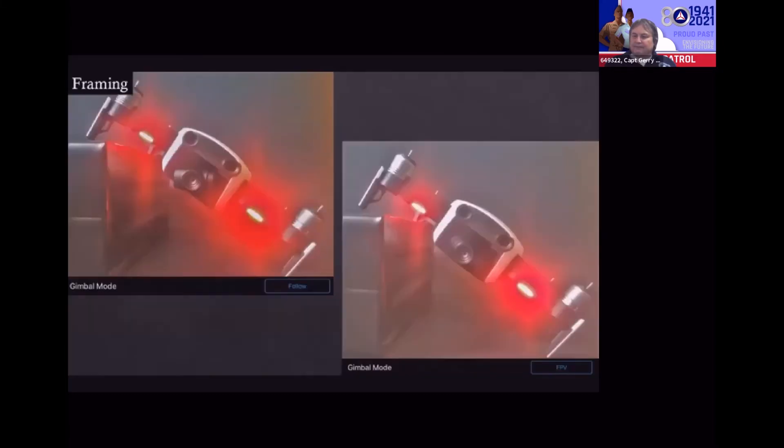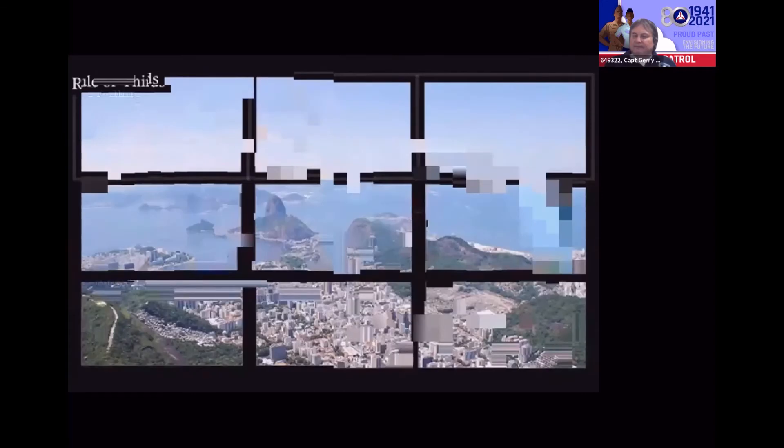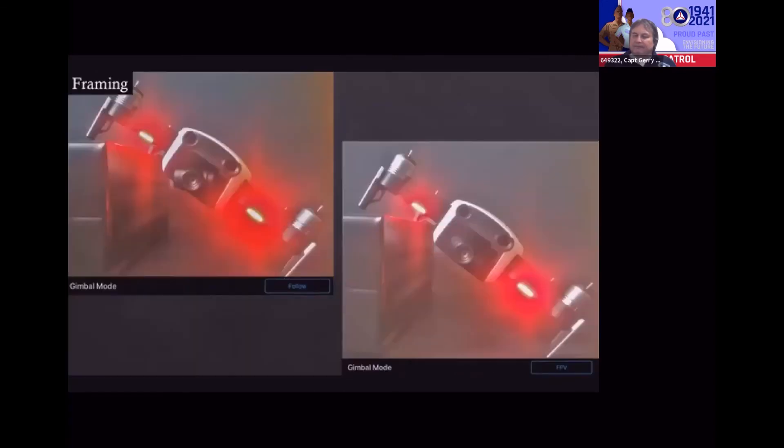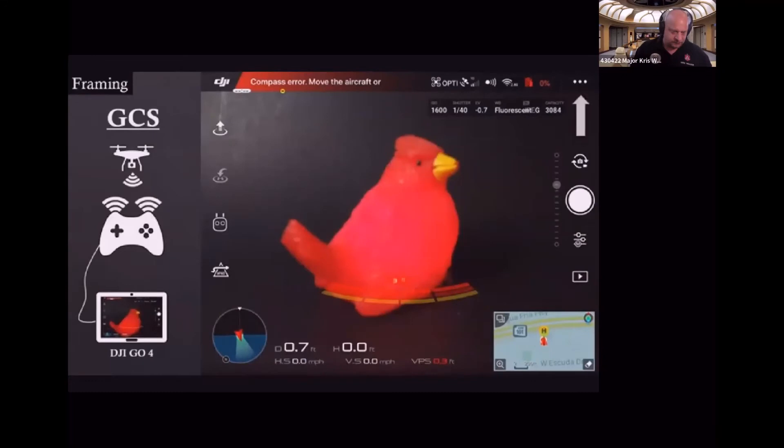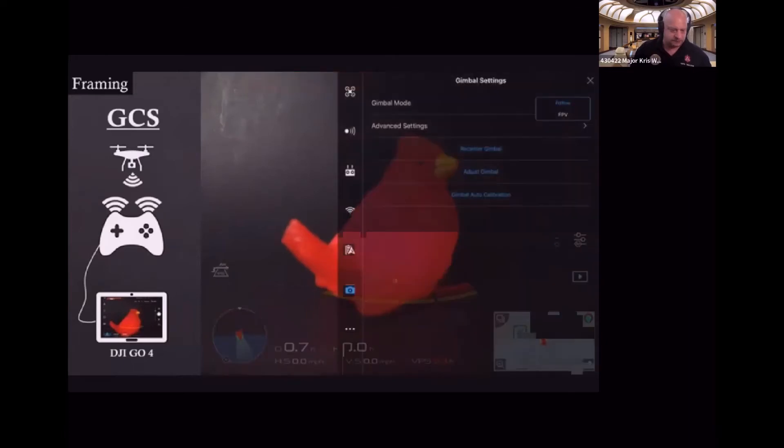Now your gimbal settings can help tremendously with keeping the horizon straight. Again this is DJI specific instruction but the concepts are transferable. You can see on the left, gimbal's in follow mode will attempt to keep the horizon straight even if the drone is maneuvering. On the right, gimbal's in FPV mode will mirror the drone's tilt. Here's DJI GO 4 again - get over to the more menu, then get to gimbal settings and gimbal modes. Now you can switch between the two.